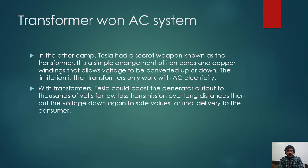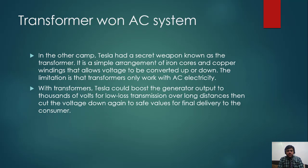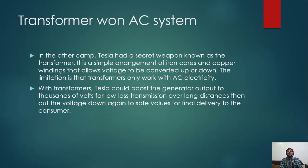With transformers, Tesla could boost the generator output to thousands of volts for low-loss transmission over long distances, then cut the voltage down again to safe values for final delivery to the consumer. This was Tesla's key advantage.